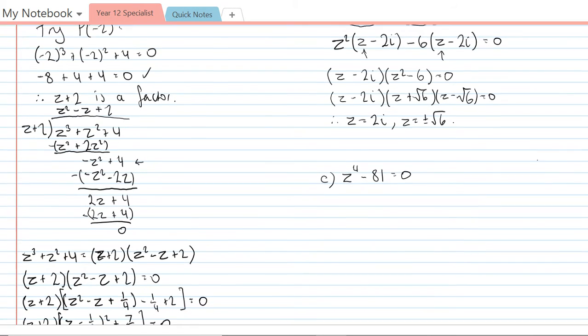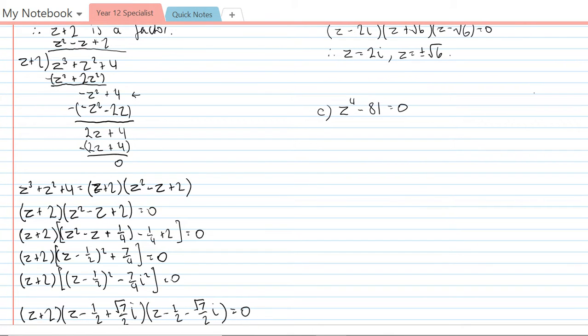In the third question, z to the 4 minus 81 equals 0. Well, this is really just a difference of two squares or difference of two fours, something like that. But we can treat this just as a difference of two squares problem. So I'm going to jump in and just do that straight away.